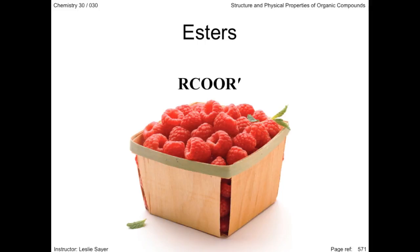The last of the hydrocarbon derivatives we're going to deal with are the esters, responsible for the fruity odors in this basket of raspberries. The first R represents a hydrocarbon, or even just a hydrogen. The R prime — the second R — represents a hydrocarbon too, but cannot be just a hydrogen. Why? Because then it would be a carboxyl group.